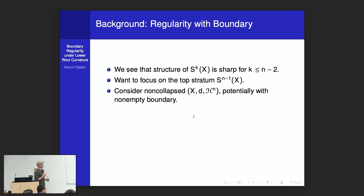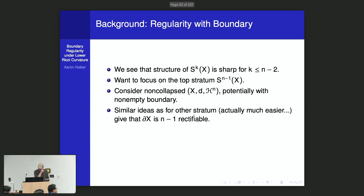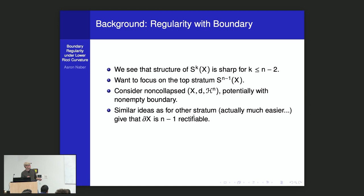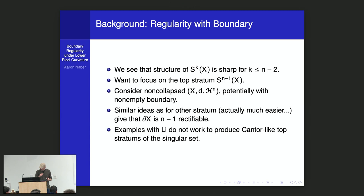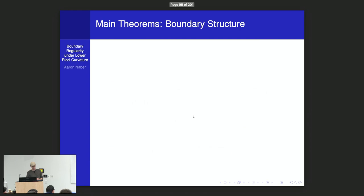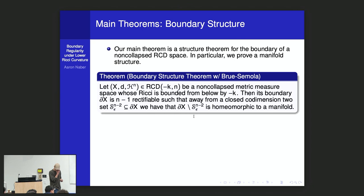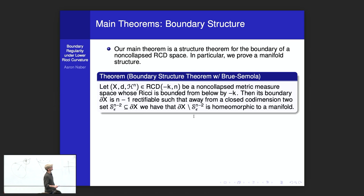The main result: take an RCD space — equivalently, a limit of manifolds with lower Ricci bounds that are n-dimensional. The boundary is n minus 1 rectifiable, and away from a finite-measure codimension-two subset it is homeomorphic to a manifold. There is also a volume convergence result: if you take a sequence of non-collapsed spaces with boundary and look at the boundary as itself a metric space with the n minus 1 Hausdorff measure, the boundary will converge to the boundary in the Gromov-Hausdorff sense and the measures converge.